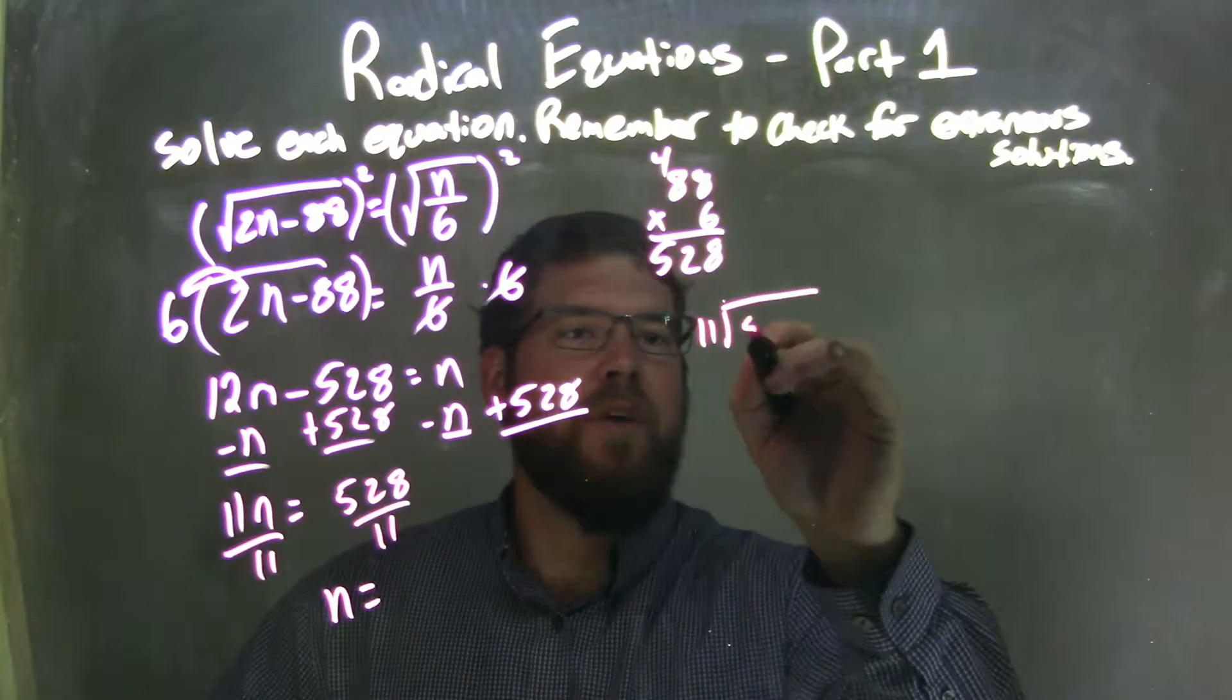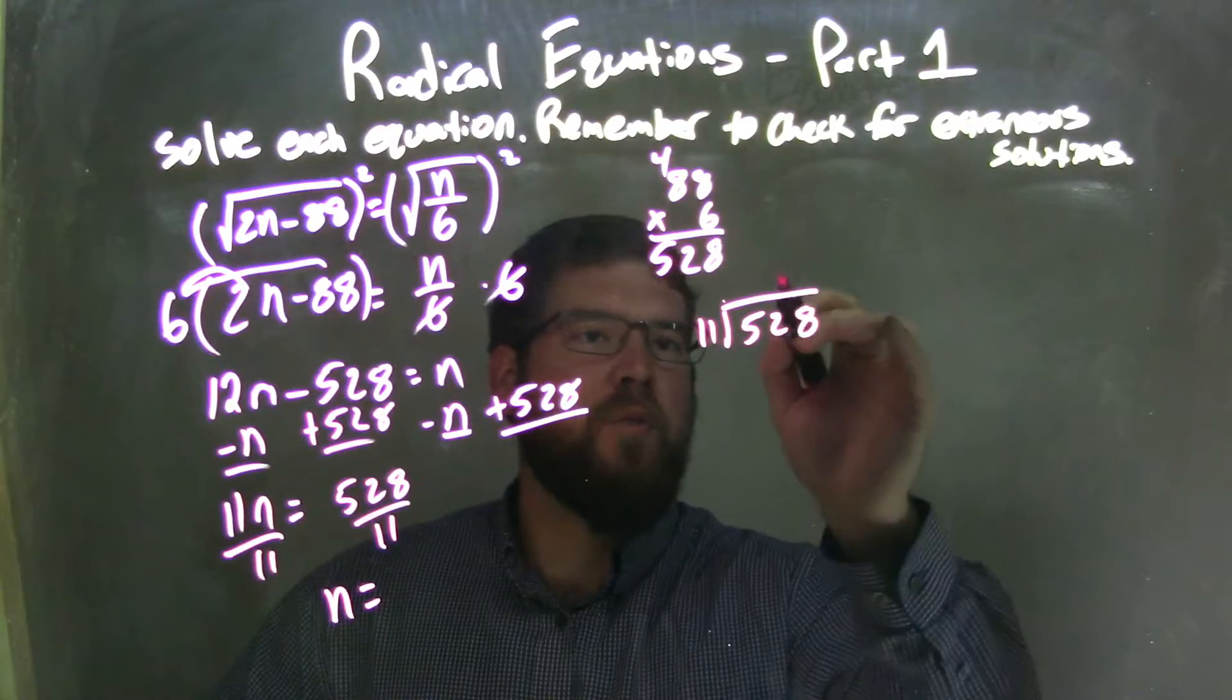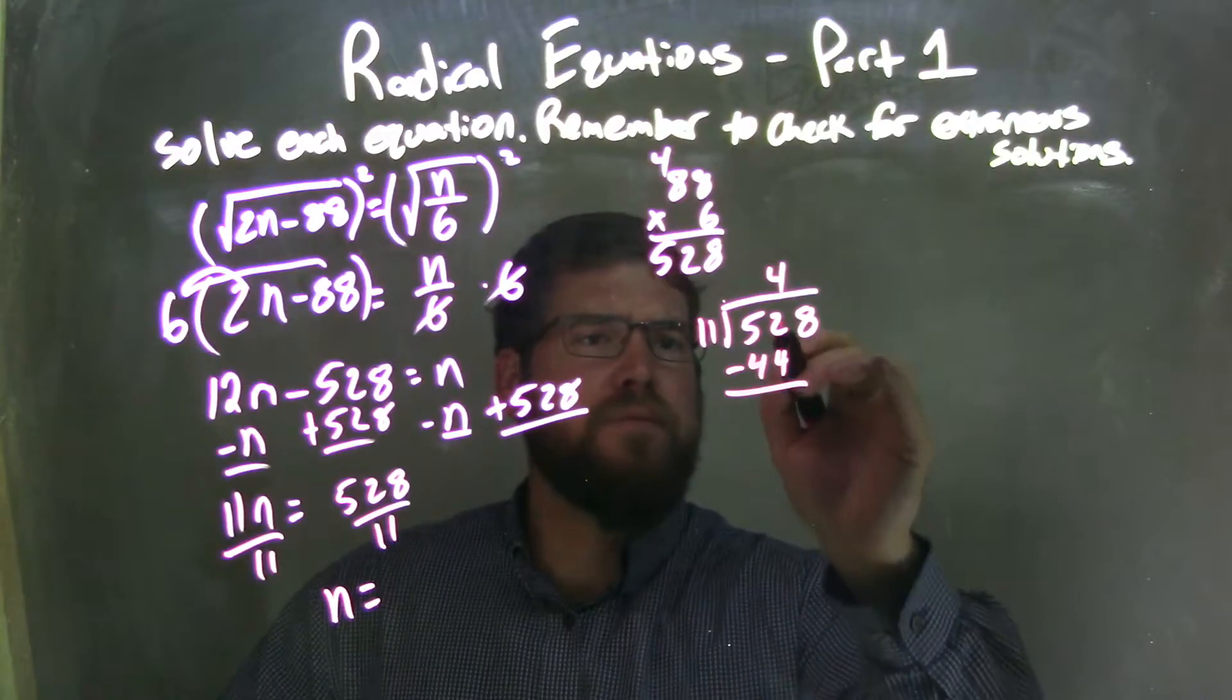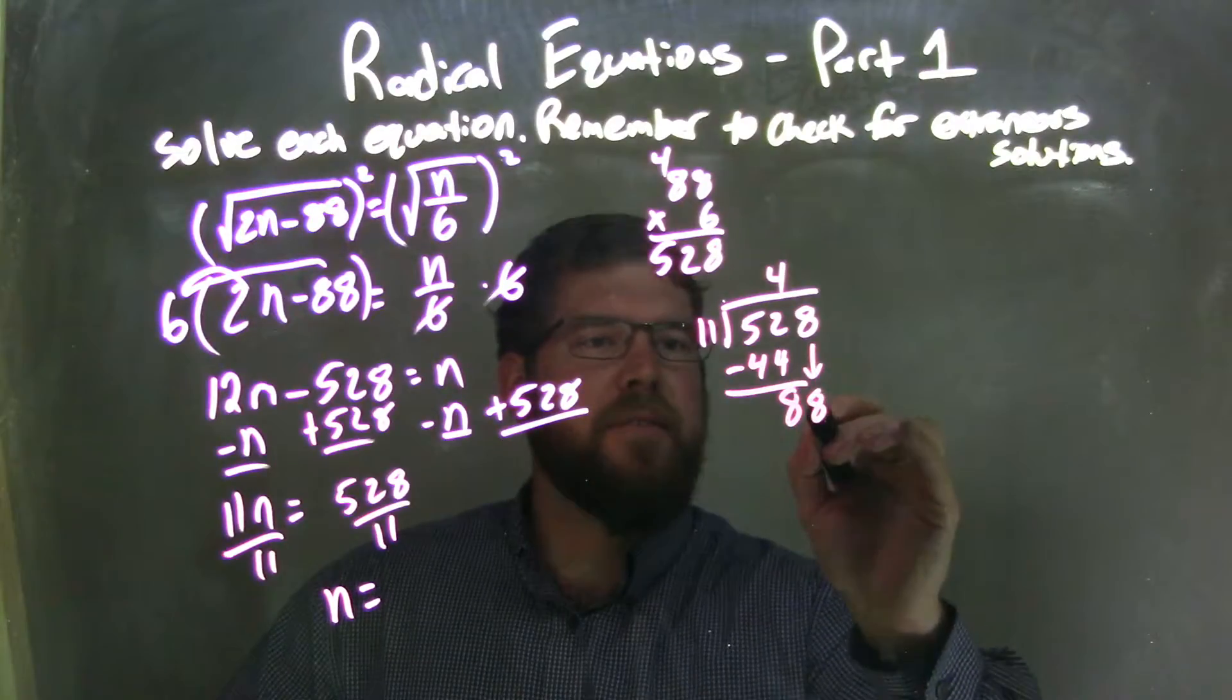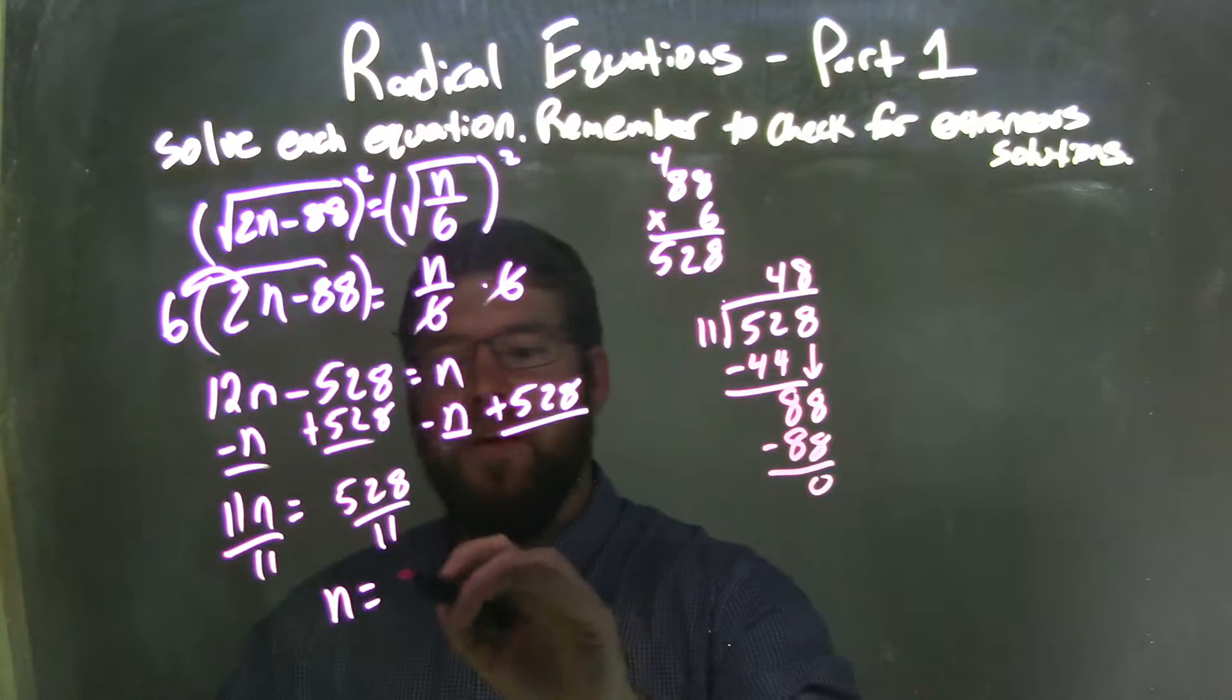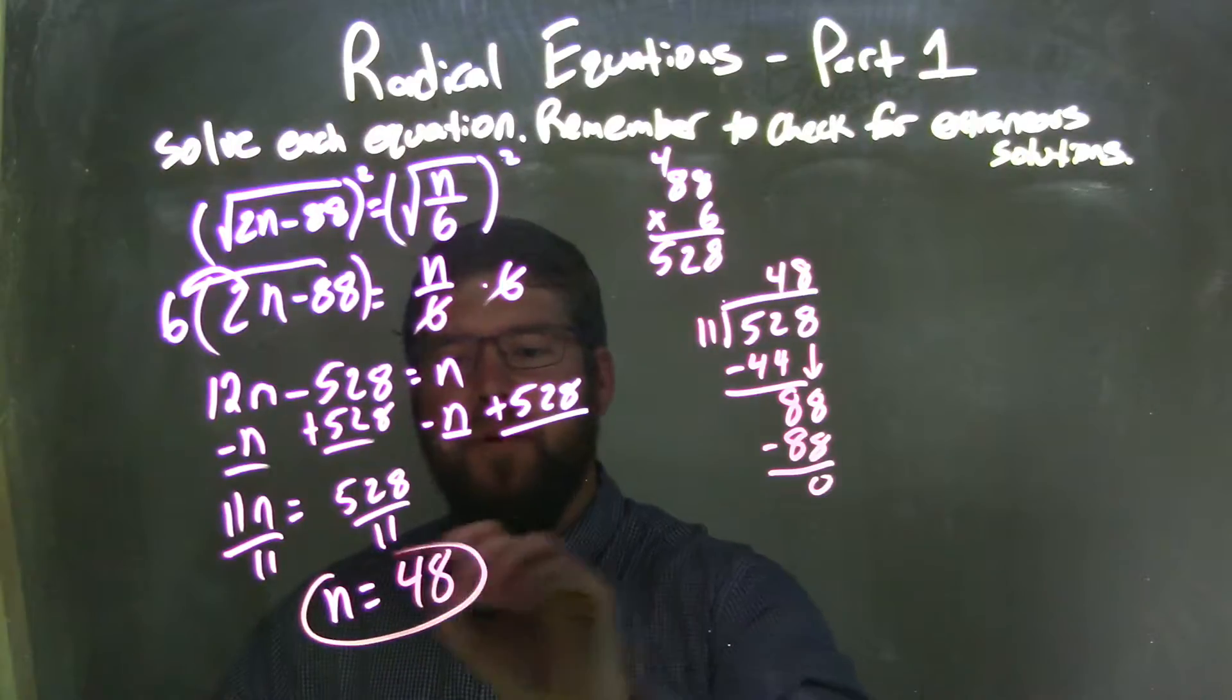11 goes into 528. 11 goes into 44, 4 times. 44 is less than 52, so we're good. Subtract them. 52 minus 44 is 8. Bring down the 8. 11 goes into 88, 8 times, 8 times 11 is 88. 0, fantastic. So, n equals 48 is my final answer.